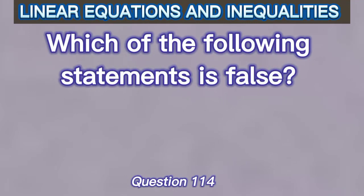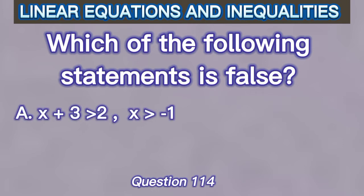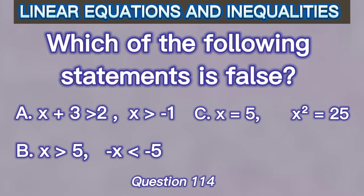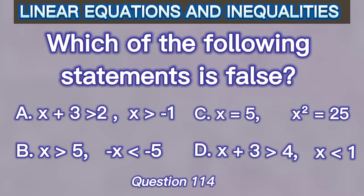Which of the following statements is false? Is it A, where X plus 3 is greater than 2, and X is greater than negative 1? Is it B, where X is greater than 5, and negative X is less than negative 5? Is it C, where X equals 5 and X squared equals 25? Or is it D, where X plus 3 is greater than 4 and X is less than 1? Before we can figure out the correct answer, we have to solve them individually and compare.